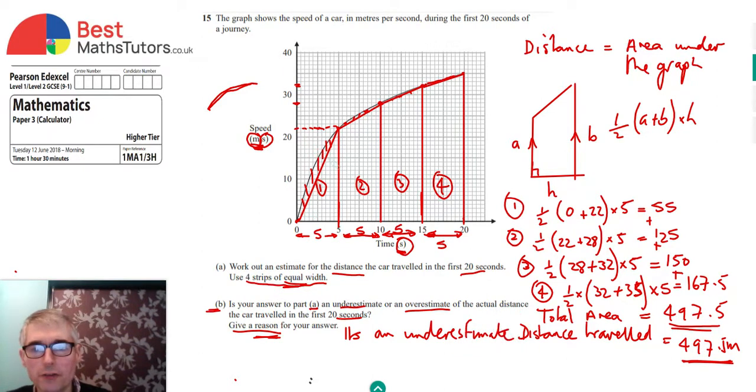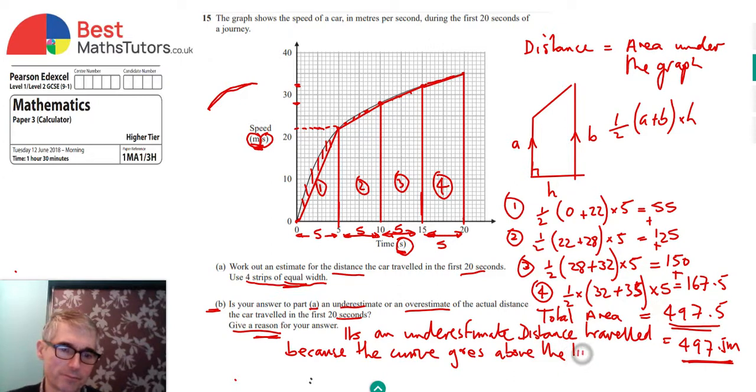So we need to say it's an underestimate. And our reason is because we've missed off some of the area. So because we could say the curve goes above the straight lines. The curve goes above the lines.